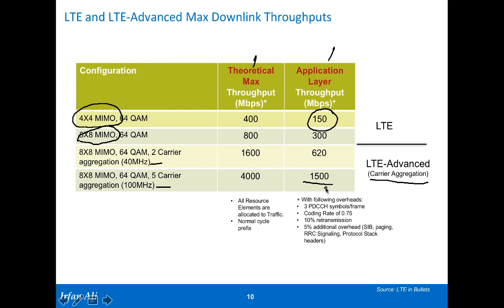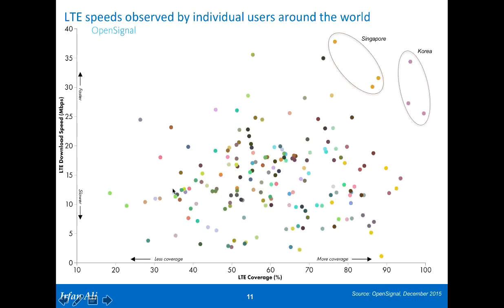What are you going to do with 1.5 gigabits per second? I don't know, but that's what LTE Advanced can give you if your operator has 100 megahertz of spectrum to aggregate and your phone can handle it. In the real world, data from OpenSignal shows that in Korea you can get up to 35–40 megabits per second, similarly in Singapore. In most other parts of the world you're getting somewhere in the 5–10 megabits per second range — but that's still pretty good for downloading a movie or a file.